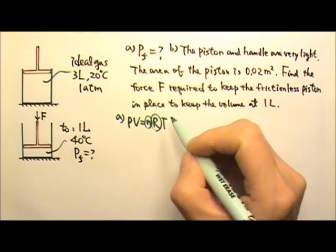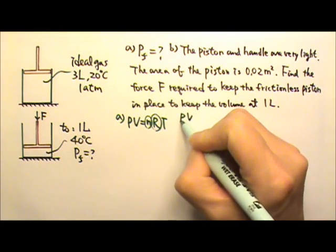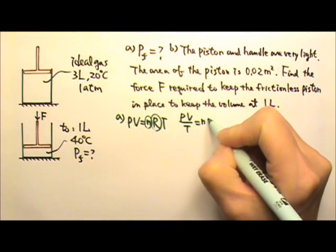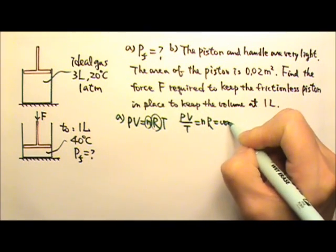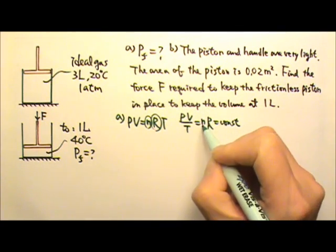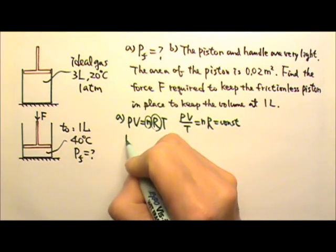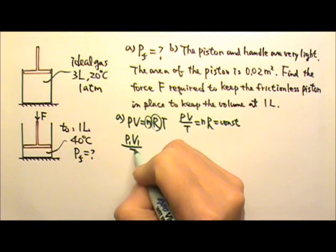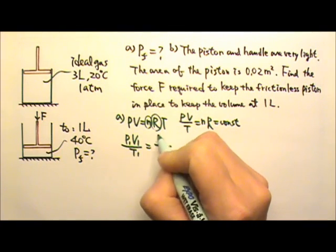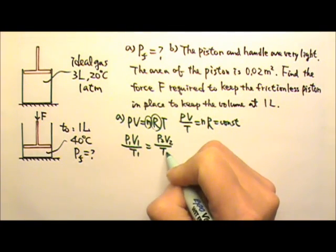So P times V over T equals N times R, which is a constant because both N and R are staying the same. So we can say P1 V1 over T1 equals P2 V2 over T2.